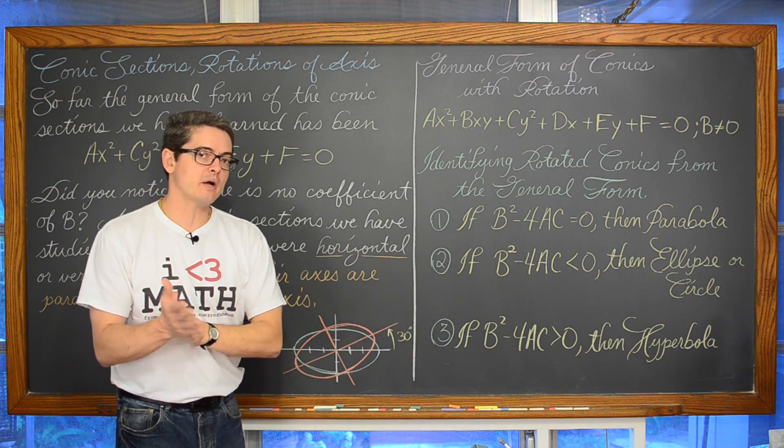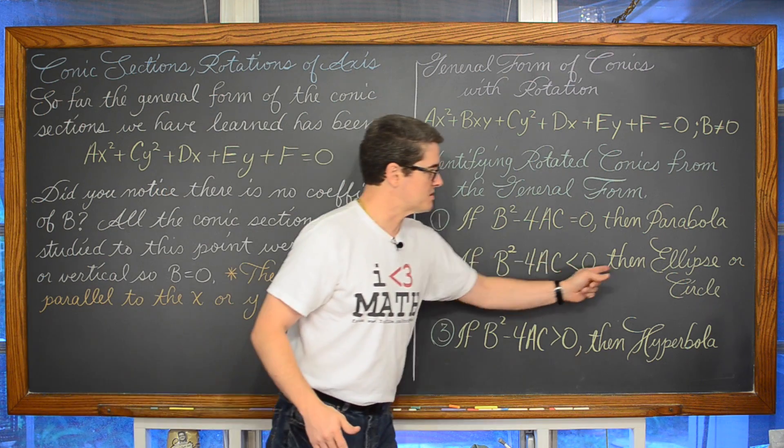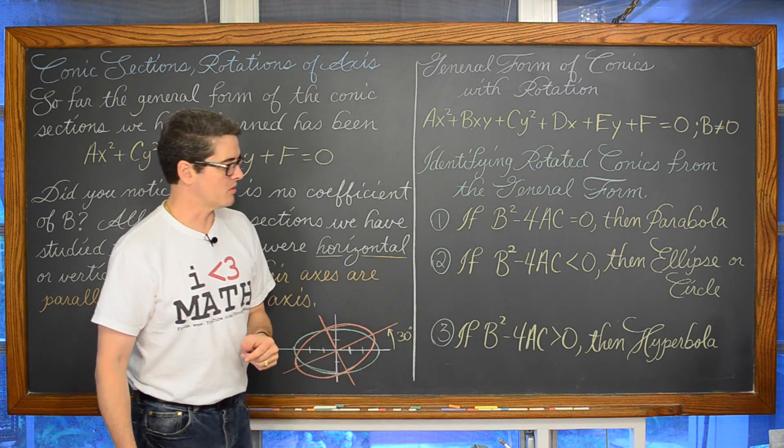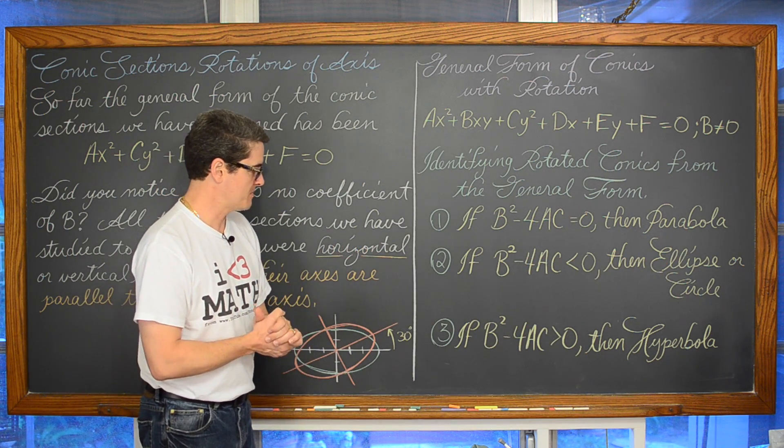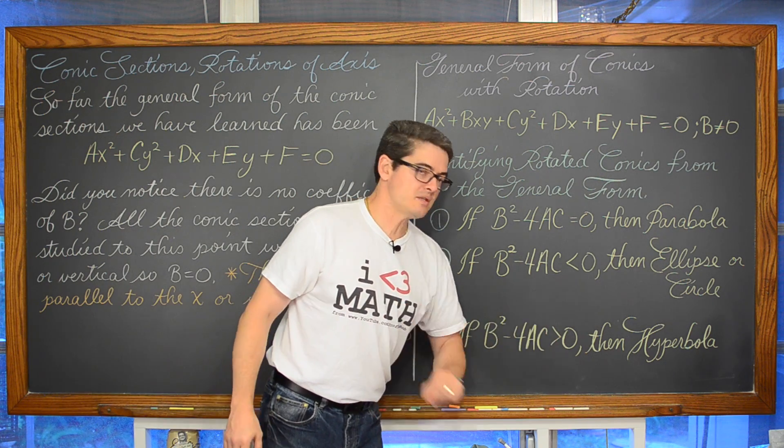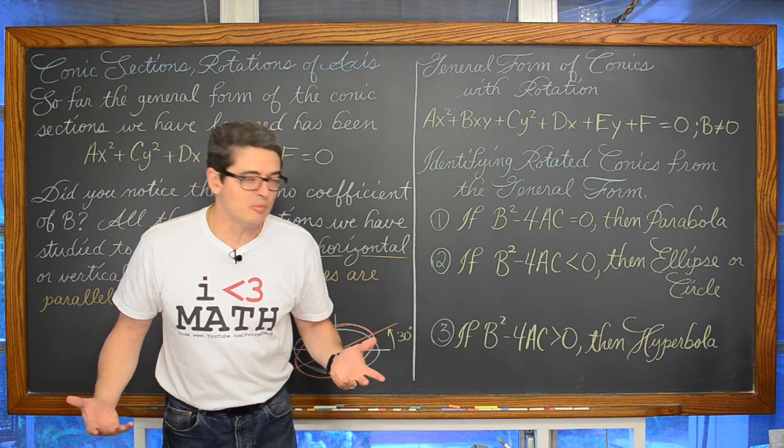So if b squared minus 4ac is less than zero then you have an ellipse or a circle. A circle is just a special type of ellipse. If b squared minus 4ac is greater than zero then you are looking at a hyperbola.